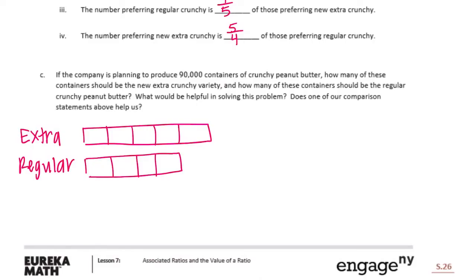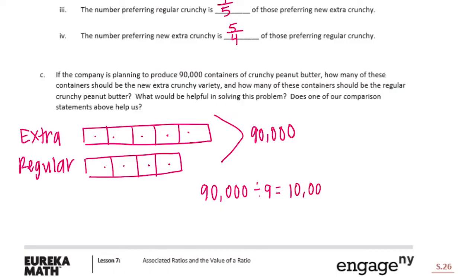The company is producing 90,000 containers total. There are nine pieces in the tape diagram — five for extra crunchy and four for regular. 90,000 divided by 9 equals 10,000 per piece. Extra crunchy is 10,000 times 5, which is 50,000 containers; regular crunchy is 10,000 times 4, which is 40,000 containers.